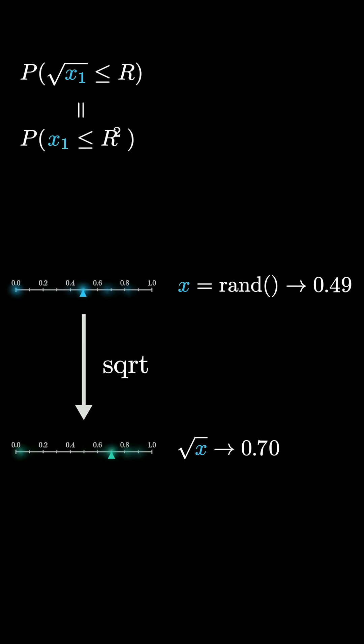That's the same thing as asking for the value itself to be less than or equal to r squared. And since it's all uniform, the answer there is again, r squared.